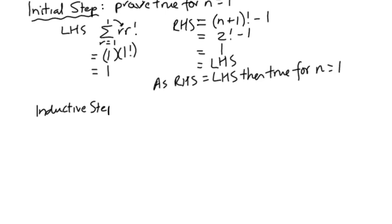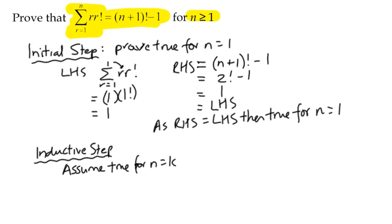So what we're really saying is that we want to declare true for n equals k. Now we're going to rewrite the relationship or the conjecture here, and we're going to replace n with k. So i.e., the sum of the terms r times r factorial from r=1 to k is equal to (k+1)! - 1.